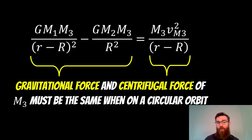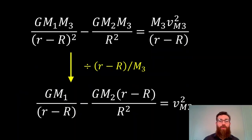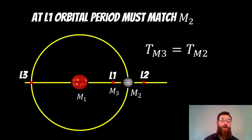If M3 is on a circular orbit, its gravitational and centrifugal forces must also equal. So we write the equation for M3, where the distance separating it from M1 is R minus r — the distance it is away from Jupiter. Tidying that up and dividing through, we can get it in terms of velocity squared for M3 on the right-hand side.